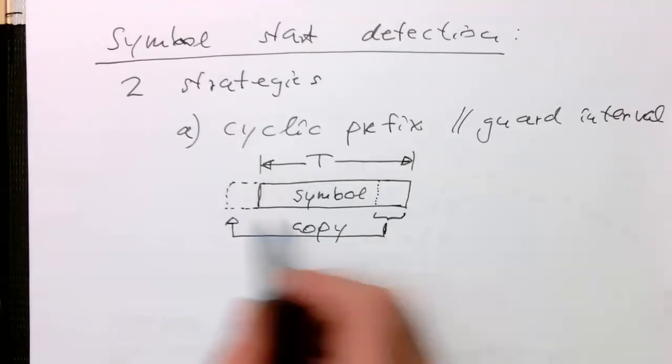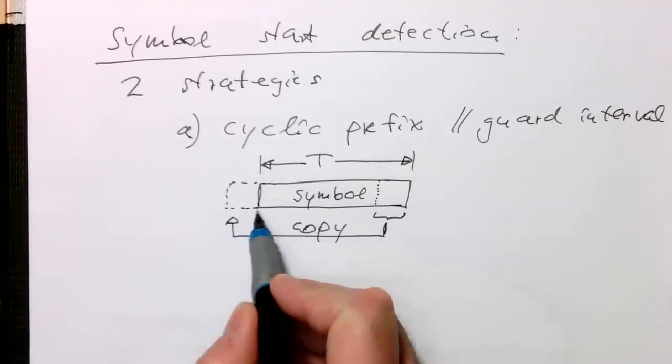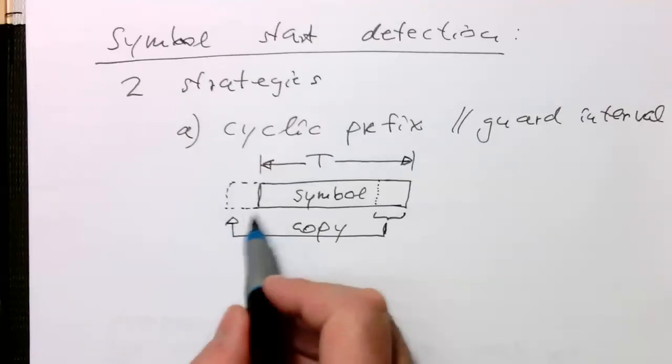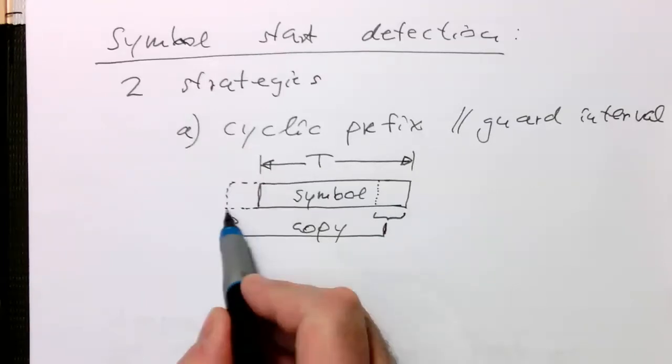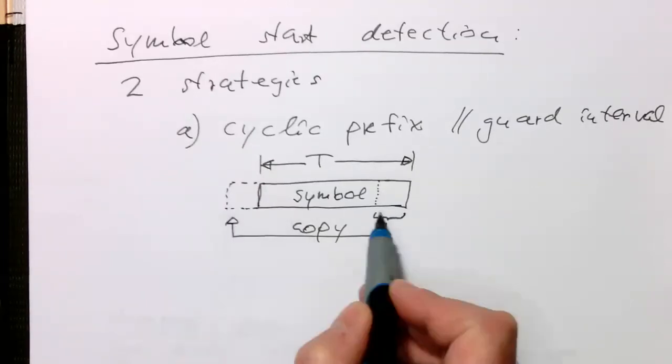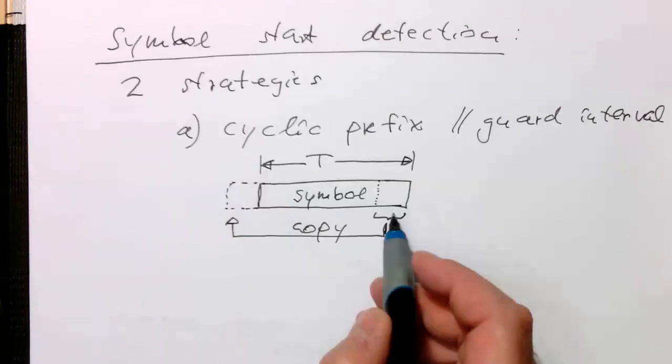And so, the idea is then that we are able to detect the symbol start here by comparing values from here with delayed values here. And then obviously, they will be totally identical when the symbol starts.